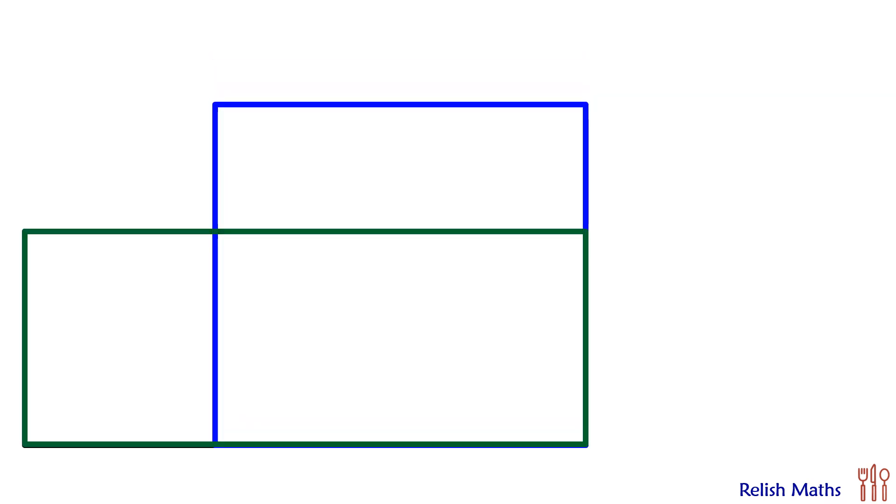In today's question, given are two intersecting rectangles of equal area. We are drawing a line segment joining the opposite vertices. Given area of this triangle is 4 cm² and the other triangle is 9 cm². Using this data we have to find the area of any one rectangle.